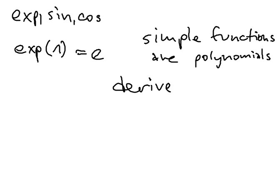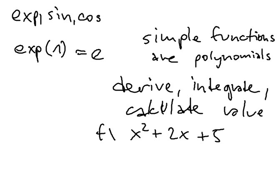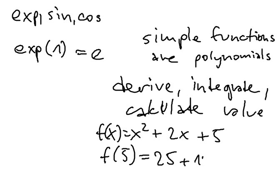For example, we know how to derive them, integrate them, or calculate values. If you want to know what is the value of x² + 2x + 5 at 5, you can just plug in and get 25 + 10 + 5, meaning this is 40. So at least we can do some basic things with them. With the exponential, we don't have a clue how to do it.